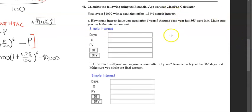Calculate the following using the financial app in the ClassPad calculator. You invest a thousand dollars with a bank that offers 1.34% simple interest. How much interest have you earned after six years? Assume each year has 365 days in it, and make sure you circle the interest amount. A lot of people did not answer the question within this format. The redemption task that you need to do already has this laid out for the first one, six years. So we need to figure out what six times 365 days is, because we have to put it in days, and we're assuming there's 365 days for each year. This ends up being 2,190 days.